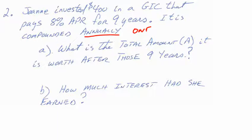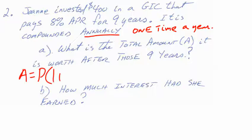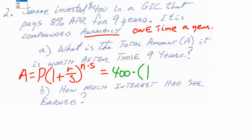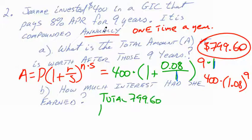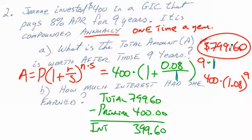If Joanne invests four hundred dollars in a GIC that pays eight percent APR — annual percentage rate — for nine years, compounded annually, what is the total amount and how much interest did she earn? Write down the compound interest formula, plug in the numbers, and hit equals. I get seven hundred ninety-nine dollars and sixty cents. She started with four hundred, so she earned an extra three hundred ninety-nine sixty in interest.